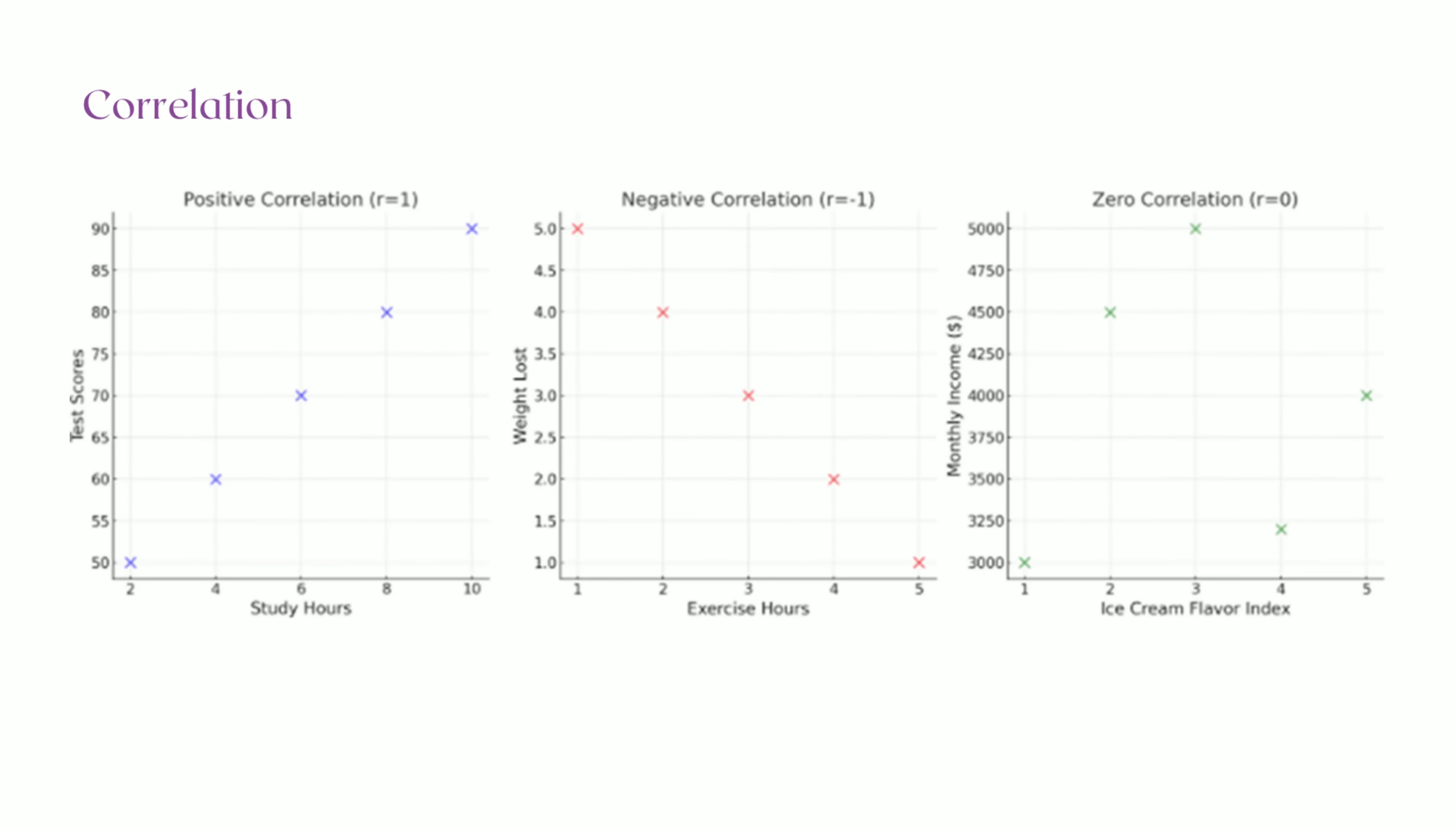Plus 1 means perfect positive correlation, 0 means no correlation, and minus 1 means perfect negative correlation. Remember, correlation does not imply causation. Just because two variables are correlated doesn't mean one causes the other.